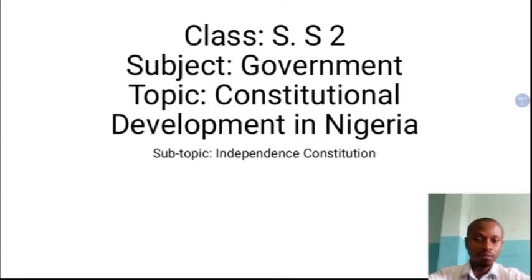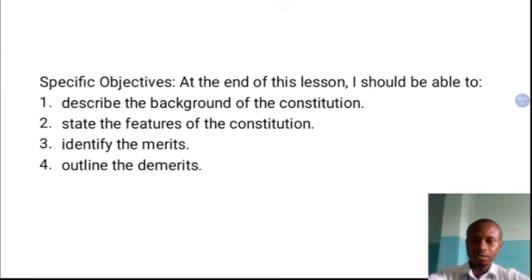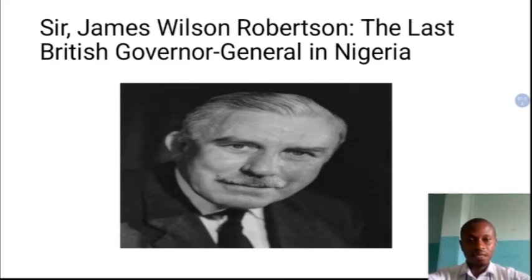We are still on constitutional development in Nigeria. Last week we discussed the Lyttleton Constitution, which was adopted in 1954. This week we will be discussing the independence constitution, a constitution that marked the beginning of an independent state called Nigeria. At the end of this class, we will be able to describe the background of the constitution, look at what happened from 1954 to 1st October 1960, and what led to the introduction and adoption of the independence constitution. We will also state the features of the constitution, identify the merits, and outline the demerits.